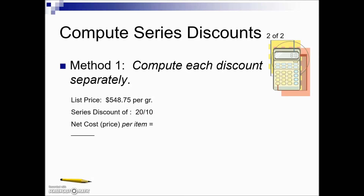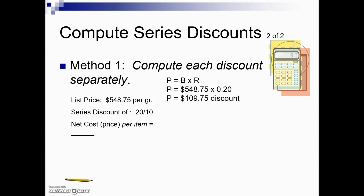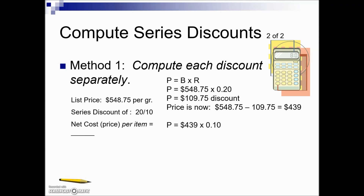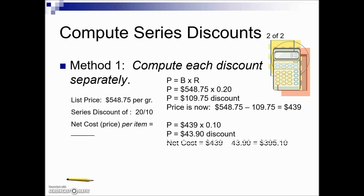Here is another example computing each discount separately. Given a list price with a series discount of 20/10: apply the 20% discount to the list price first — if there were only this one discount, the net cost would be $439. Because there is a second discount, we use $439 as the new base, take 10% of it to get $43.90, and subtract that from $439 for a final net cost of $395.10.